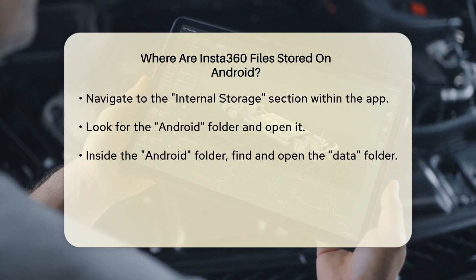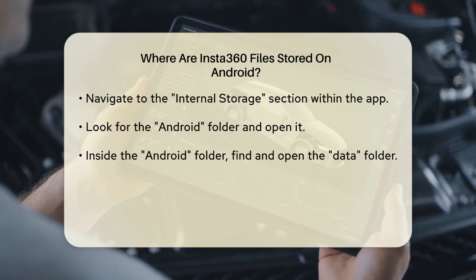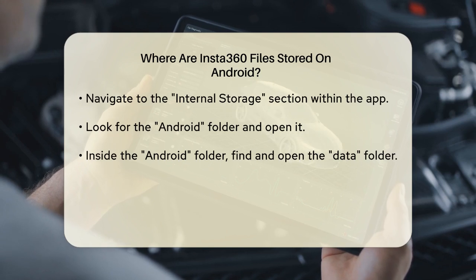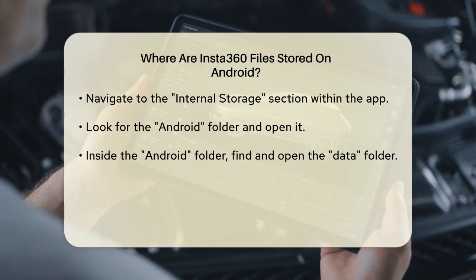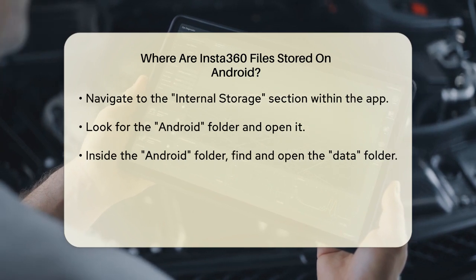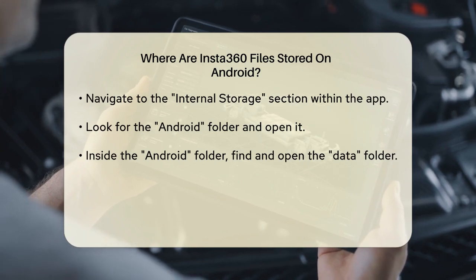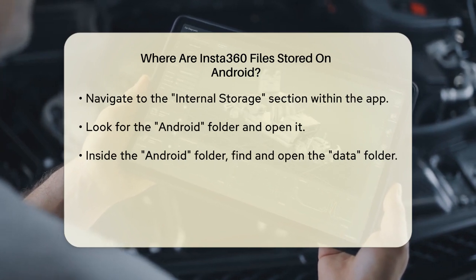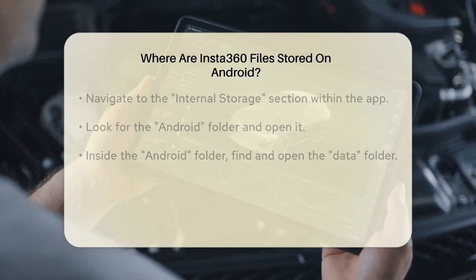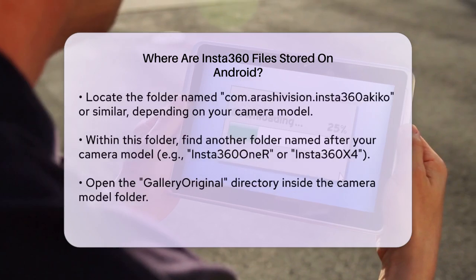Look for the Android folder and then open it. Inside the Android folder, you'll find a Data folder. Open this as well. Now, you'll see a folder named com.arashivision.insta360akiko, or something similar, depending on your camera model. This is where the Insta360 app stores its files.